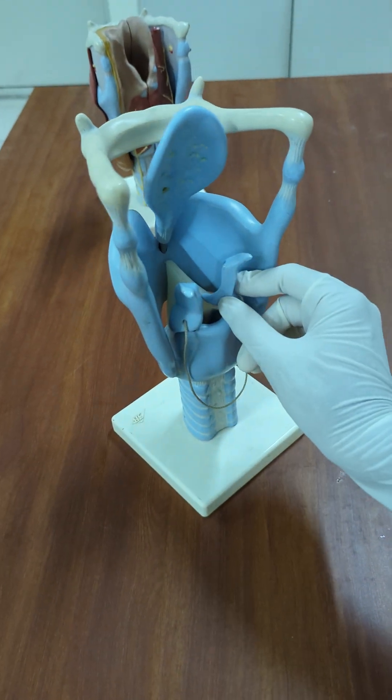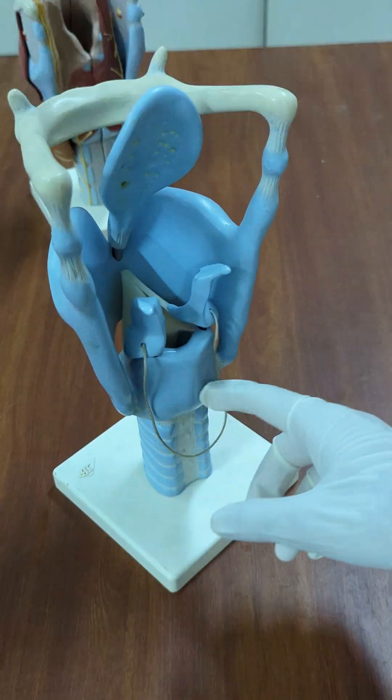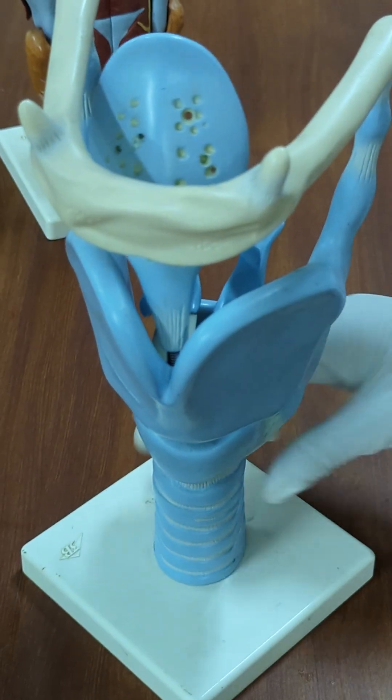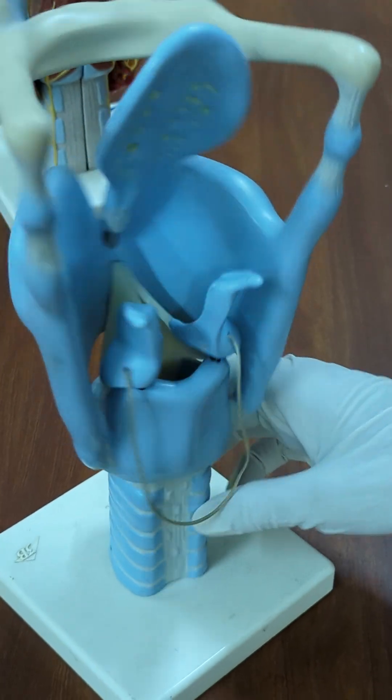This is the arytenoid cartilage, this is the cricoid cartilage, the c-shaped rings here, from here extending up to here, this is the trachea.